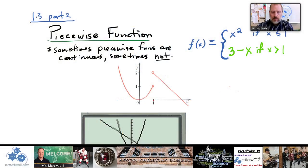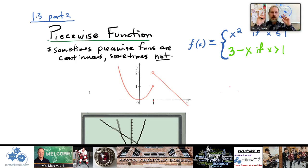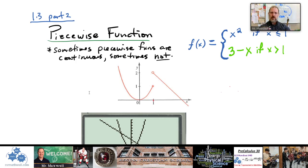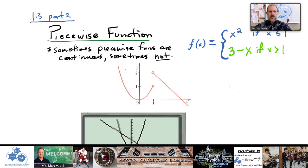Alright, Calculus 1.3 part 2 — we're going to talk about piecewise functions. A piecewise function is a function that appears to be made up of different parts, and sometimes those parts are different shapes like curves, lines, absolute values, or upside-down parabolas. They're like little pieces stuck together in an odd way.